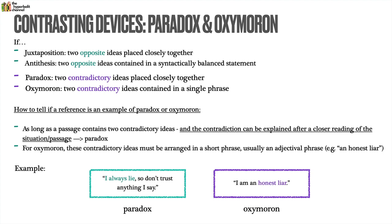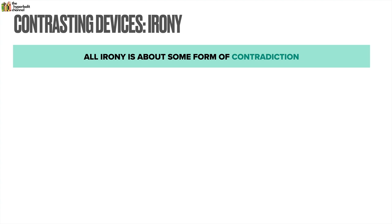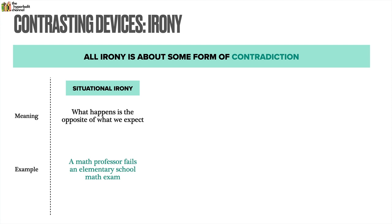Next up we've got irony, a literary device that tends to trip up a lot of students. But just remember: all irony is about some form of contradiction — it's all about the opposite of expectations. Situational irony is when something happens contrary to our expectation, for example when a math professor fails an elementary school math exam. That's obviously the opposite of what we would expect of a math professor, who must be very proficient at mathematics.